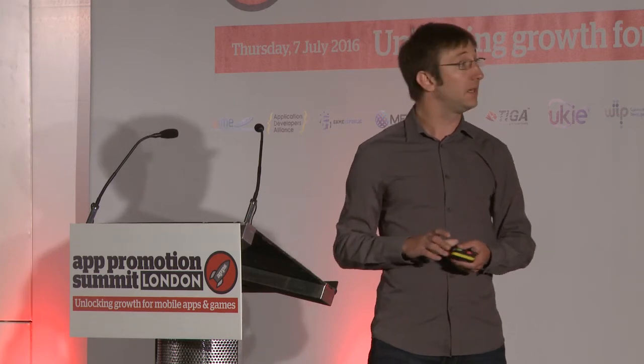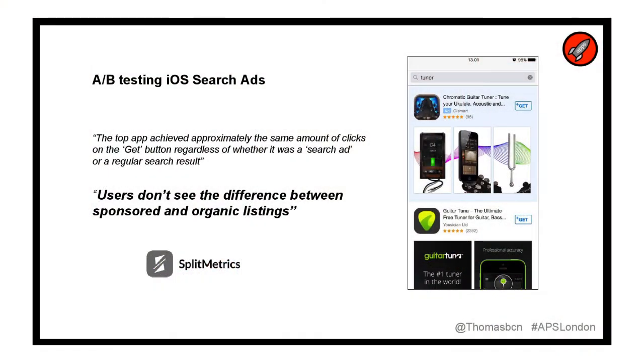Another interesting area is search ads. One company tested a listing on the App Store with the new ads versus the organic results. The result was that the rate of clicks on the first result is exactly the same — the conclusion being that users don't see the difference between ads and organics. That's the kind of thing you can learn by testing. This case study is going to be published by Splitmetrics next week.